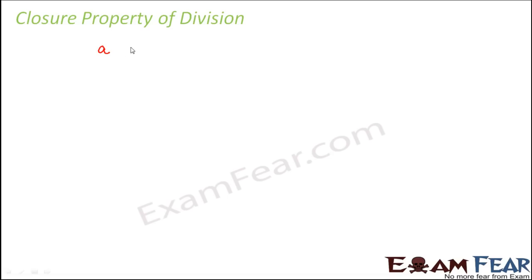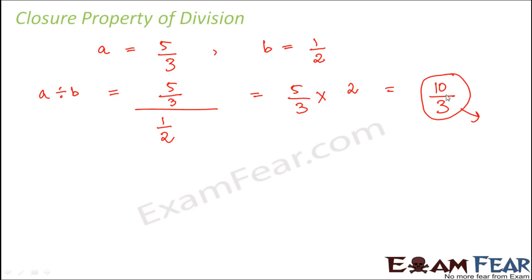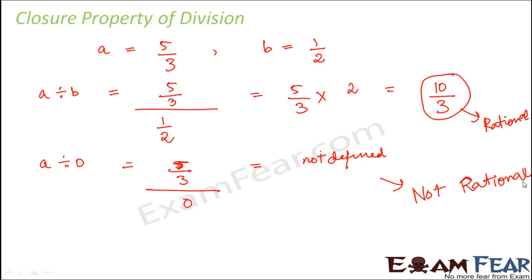Now let us come to the closure property of division, which does not hold true for all rational numbers. Let a = 5/3 and b = 1/2. Then a ÷ b = 5/3 ÷ 1/2 = 5/3 × 2 = 10/3, which is in the form p/q with q ≠ 0, so it is a rational number. But when you divide by 0: 5/3 ÷ 0 is not defined, and therefore not rational. Since this doesn't hold for 0, rational numbers are not closed under division. So closure property works for addition, subtraction, and multiplication, but not for division.